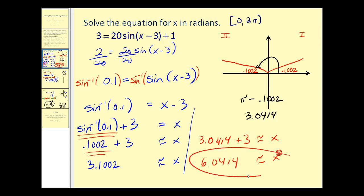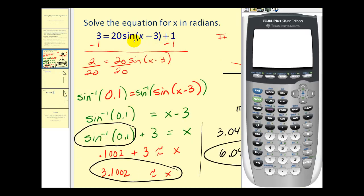And so we'll have x is approximately also equal to 6.0414. So we have two possible solutions for x for this equation on this given interval.